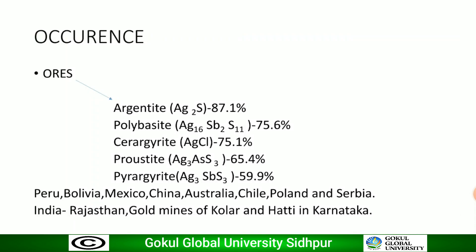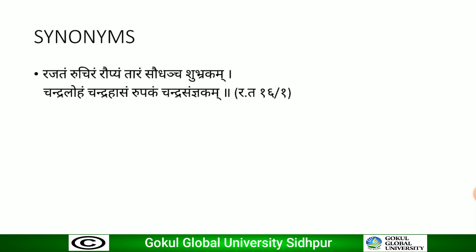The main ores of silver are Argentinite, Polybasite, Cerargyrite, and Proustite. Silver is found in Peru, Bolivia, Mexico, China, Australia, Chile, Poland, and Serbia. In India it is found in Rajasthan, and in the gold mines of Kolar and Hatti in Karnataka. Synonyms of Rajata include Ruchira, Ropya, Tara, Saudha, Sundraloha, Chandrahasa, and Rupaka — all are names used for silver in Indian literature.